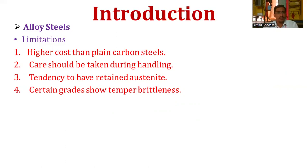There is also a tendency to form retained austenite. When alloying elements are added to steel, there are chances of retained austenite forming during the conversion from the austenite phase to upper bainite or martensite, which causes a reduction in properties. Additionally, certain grades show tempered brittleness, which is another problem that can arise in alloy steels.